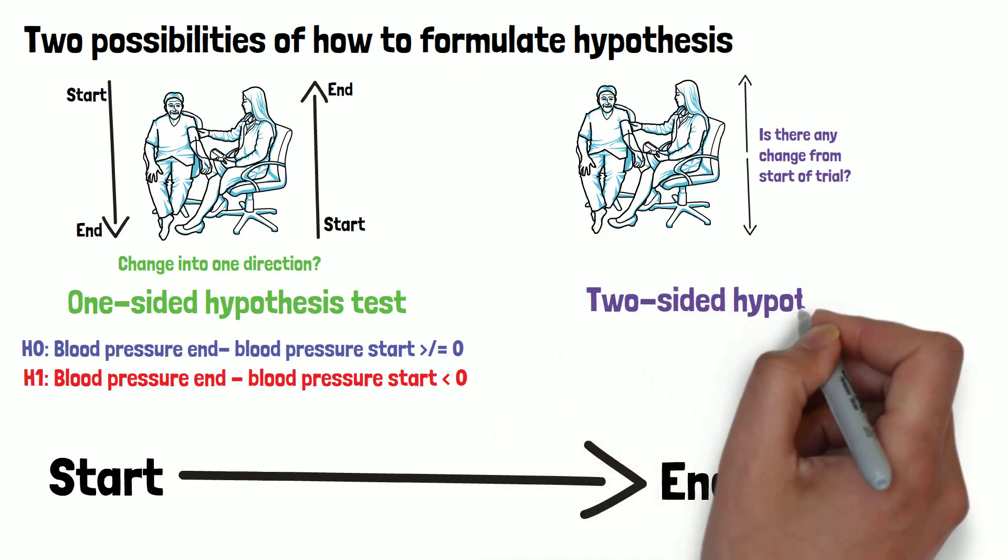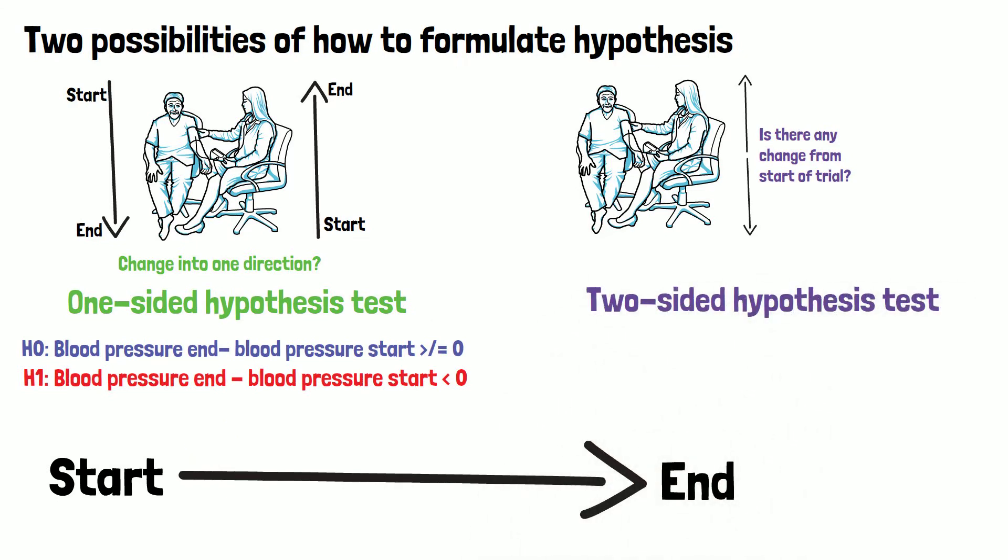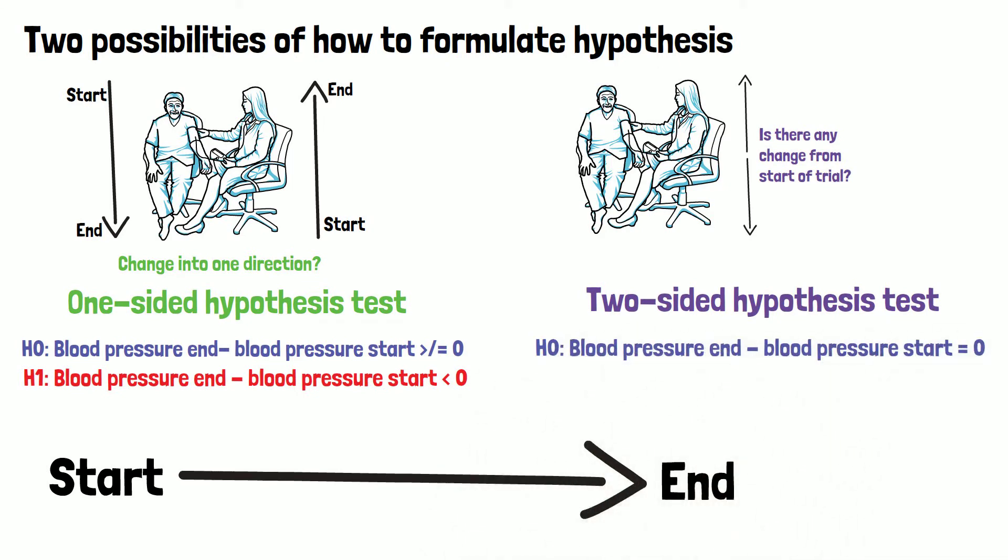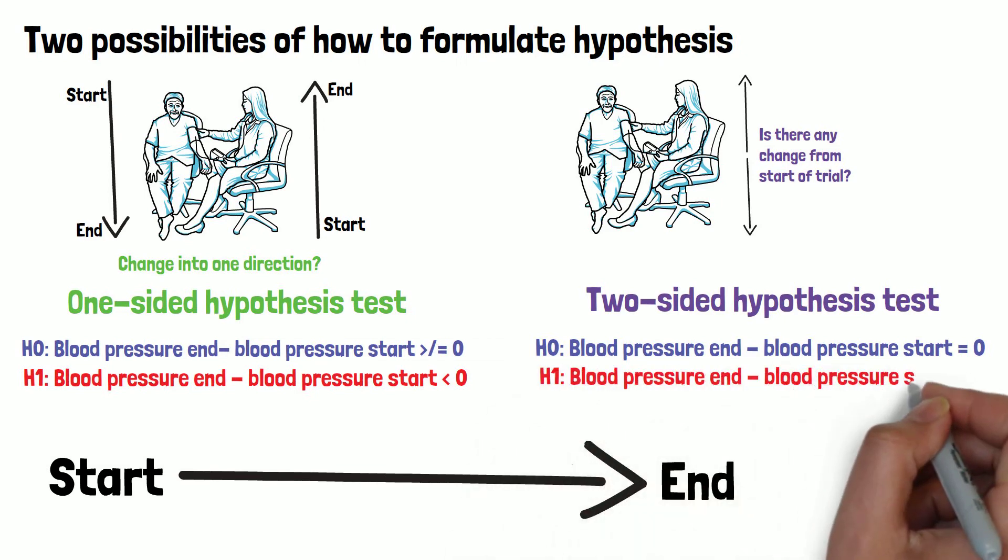The second approach is called a two-sided hypothesis test and has the following notation. The null hypothesis here states that there will be no change in blood pressure between the beginning and the end of the trial. Whereas the alternative hypothesis is to prove that there is a difference between the blood pressures measured at the start and at the end of the trial in either direction.